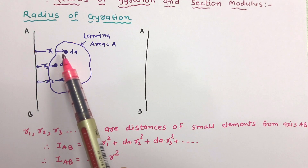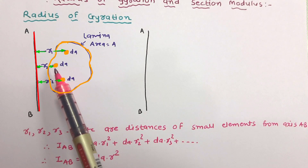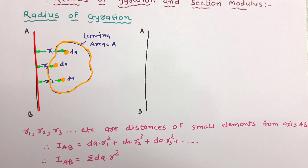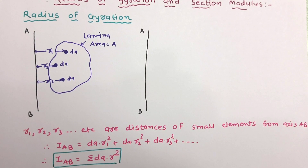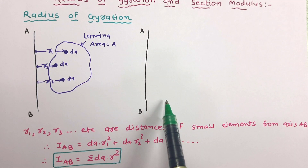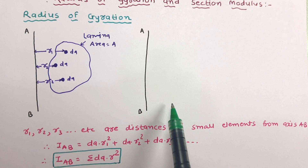So DA into R1 square plus for the second element it is DA into R2 square. Likewise, for all elements it can be written. And finally, the moment of inertia of this lamina about AB axis will be equal to summation of DA into R square. Now let us have all individual small elements of this lamina be arranged at the same distance K from AB axis in such a way that the moment of inertia about the axis AB remains unchanged.